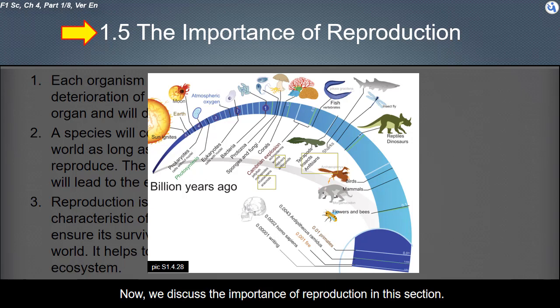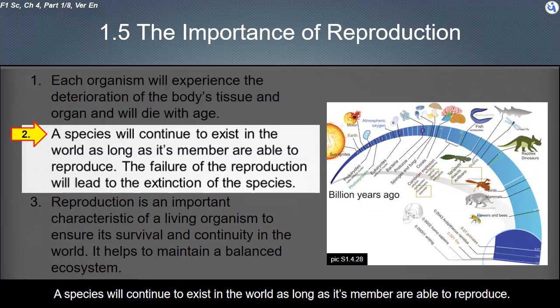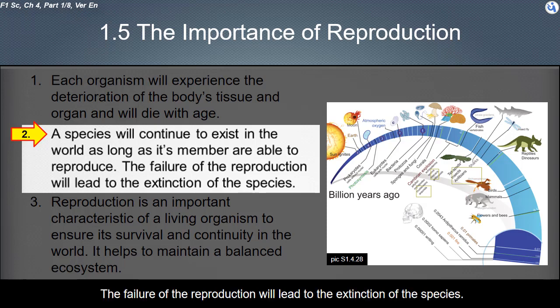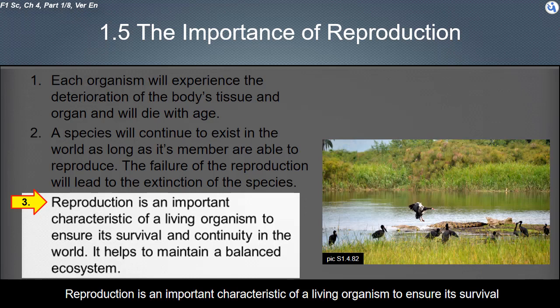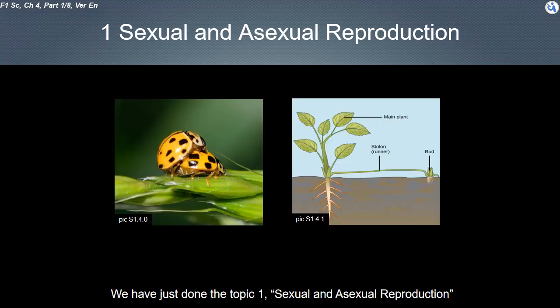Reproduction is important because each organism experiences deterioration of body tissues and organs and will die with age. A species will continue to exist as long as its members are able to reproduce; failure to reproduce leads to extinction. Reproduction is an important characteristic of living organisms to ensure survival and continuity, and it helps to maintain a balanced ecosystem. This concludes topic one on sexual and asexual reproduction.